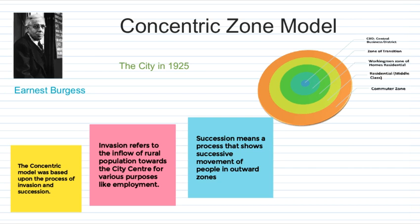To recap: we learned about the concentric zone model put forward by Ernest Burgess in the book published in 1925. The five zones are the central business district, zone of transition, working men's zone, residential zone, and commuter zone. The model is based on two key concepts — invasion, referring to the inflow of rural population towards the city, and succession, the successive outward movement of people. Despite its criticisms, it remains one of the most discussed models of city development.